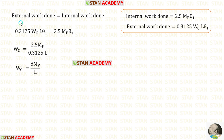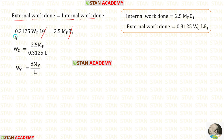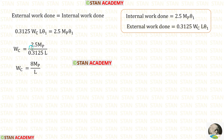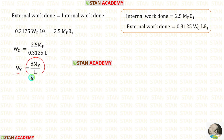Now let us equate the external work done and the internal work done. We can cancel theta 1, and rearranging with 0.3125 and L in the denominator, 2.5 divided by 0.3125 equals 8. So for Wc we are getting 8 Mp upon L.